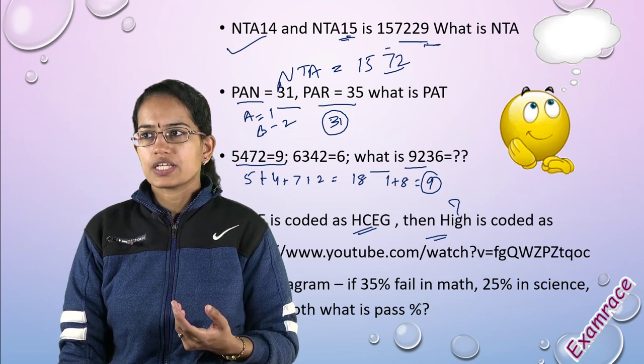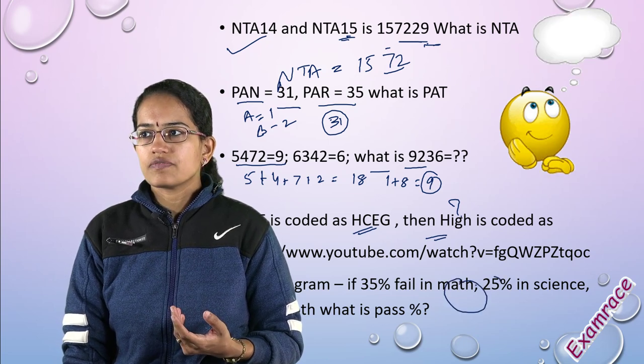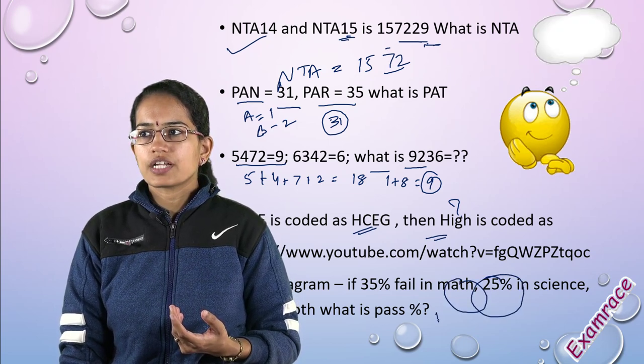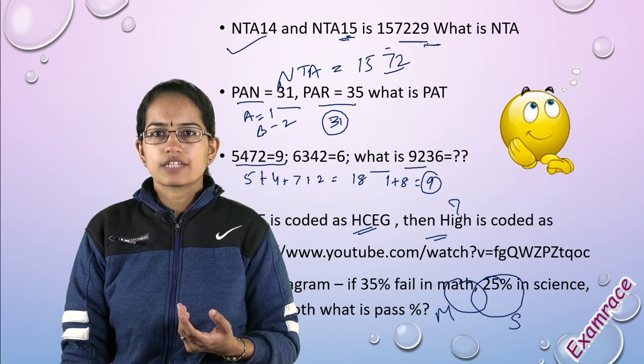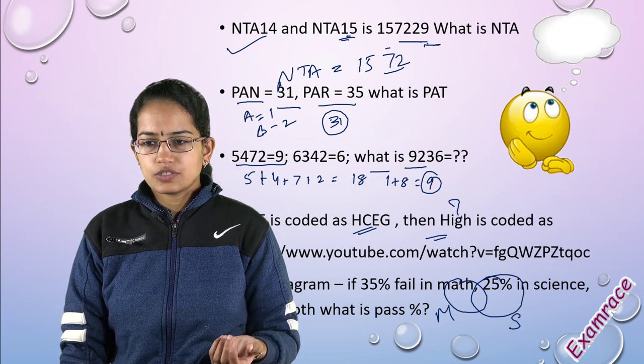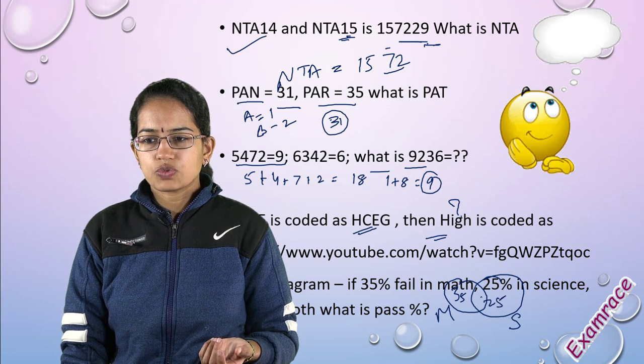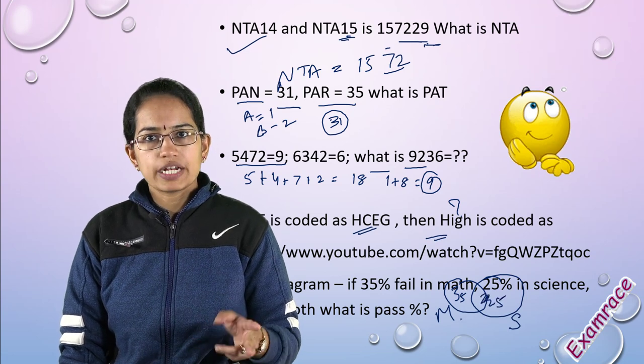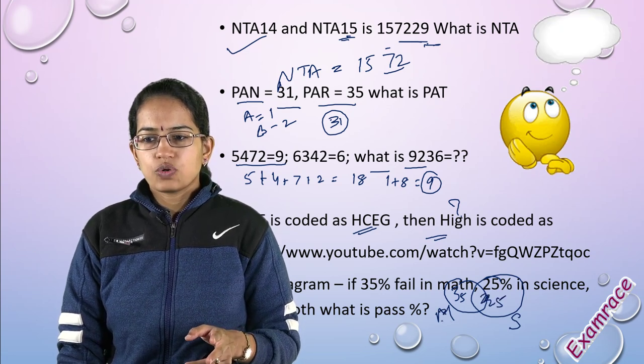In math, there was an interesting Venn diagram question. You have math and science students. For math, failed students were 35, for science it was 25, and common students who failed in both were 20.